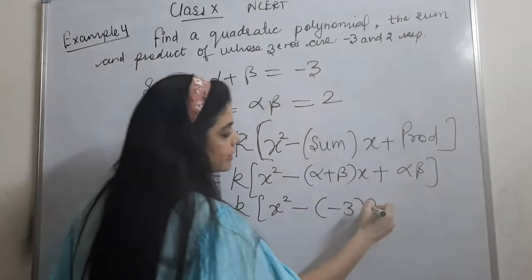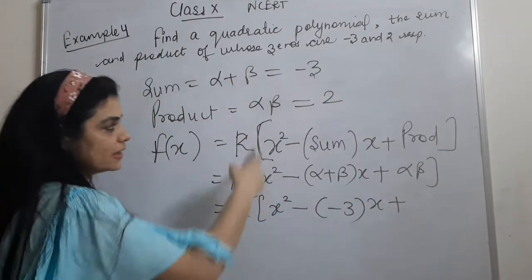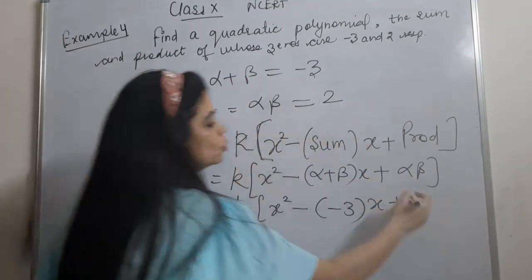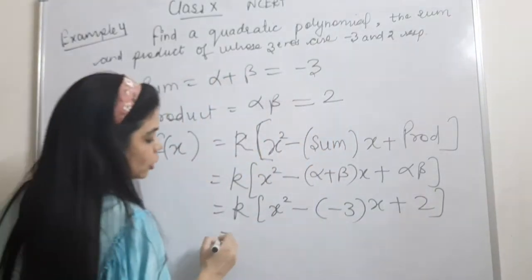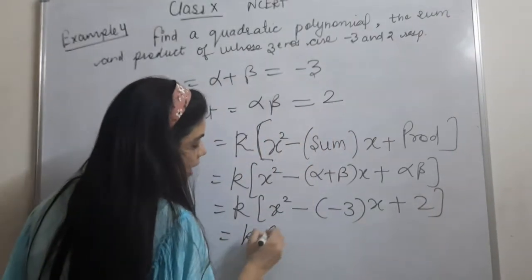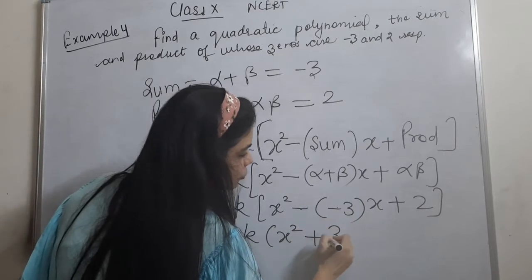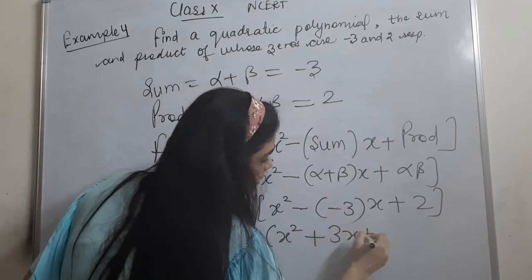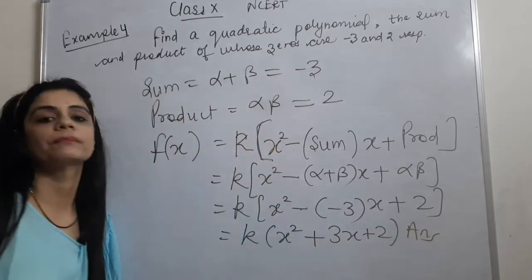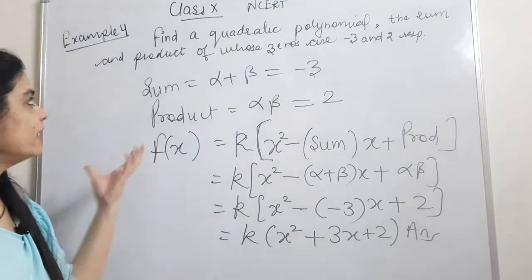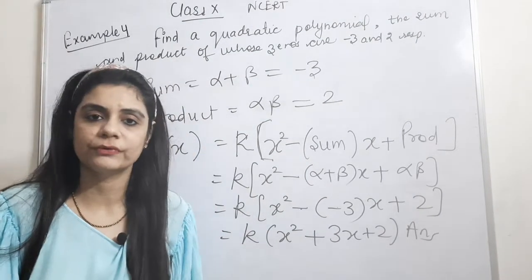Substituting, we get k times x squared minus (minus 3)x plus 2, which gives k times x squared plus 3x plus 2 as our answer. Hence we have completed example number 4.